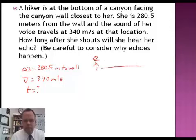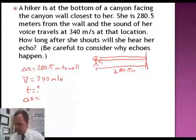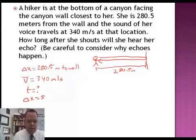So we have a person. They're 280.5 meters away from the wall. When an echo happens, the sound doesn't just travel to the wall. It bounces off the wall and comes back. So in actuality, the displacement that we're going to talk about, total distance that's traveled for the sound, 280.5 meters, and then it's going to come back 280.5 meters. So our total distance that this is going to travel is 561 meters.